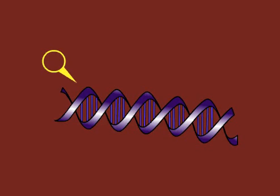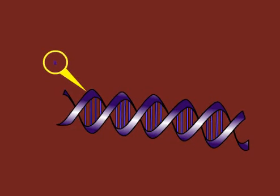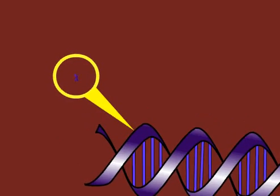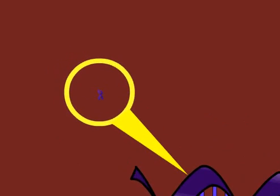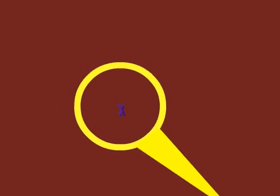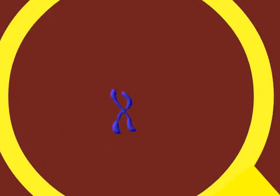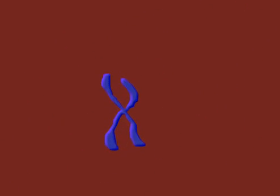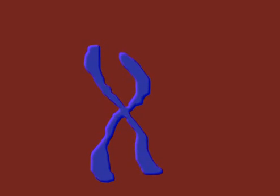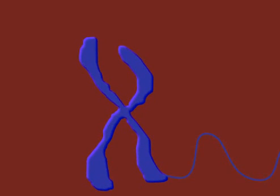A chromosome is a single piece of coiled DNA as well as protein molecules bound to the DNA, which serve to package the DNA and control its functions.